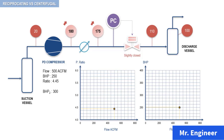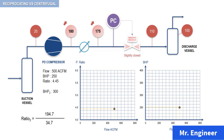First, we calculate the new pressure ratio. Recall, it is equal to the discharge pressure of the compressor divided by the suction pressure, and both pressures must be expressed in absolute pressure. So here, the new ratio is equal to 180 psi plus 14.7, divided by 20 psi — the suction of the compressor, which remains unchanged — plus 14.7 psi to convert it into absolute pressure.